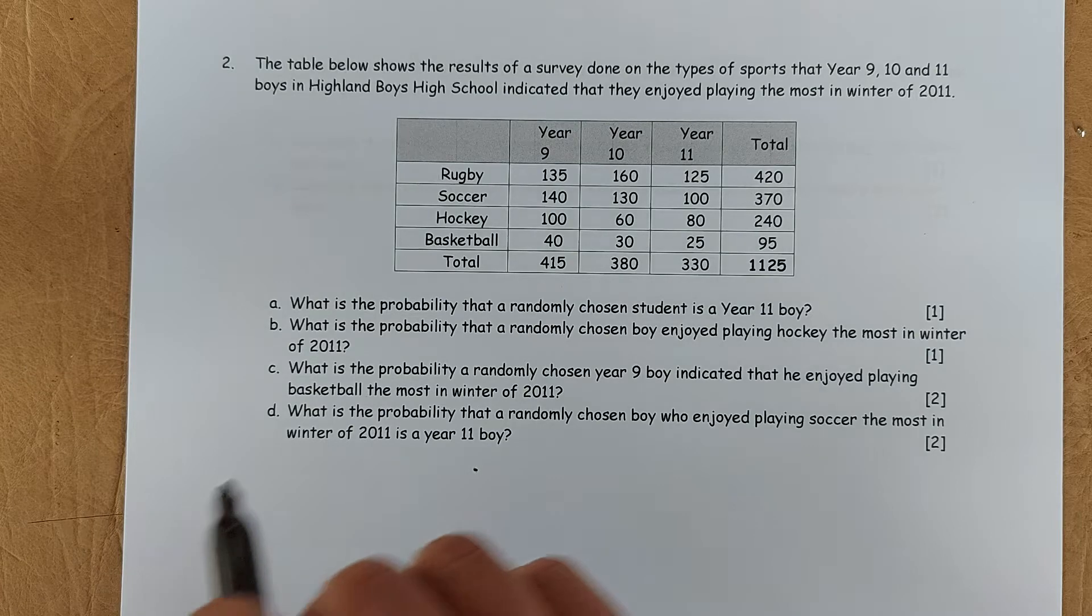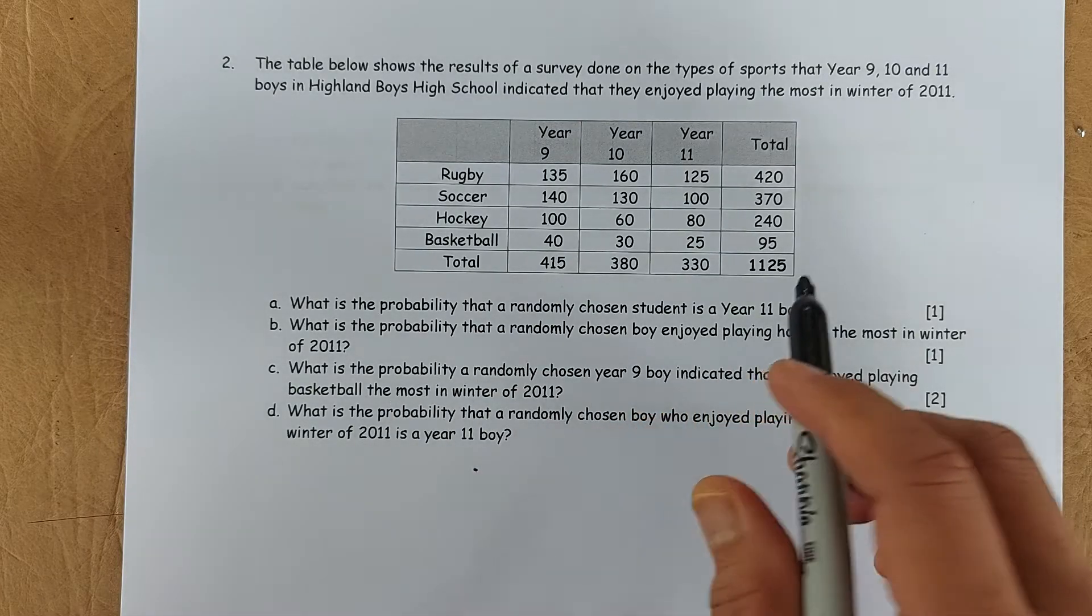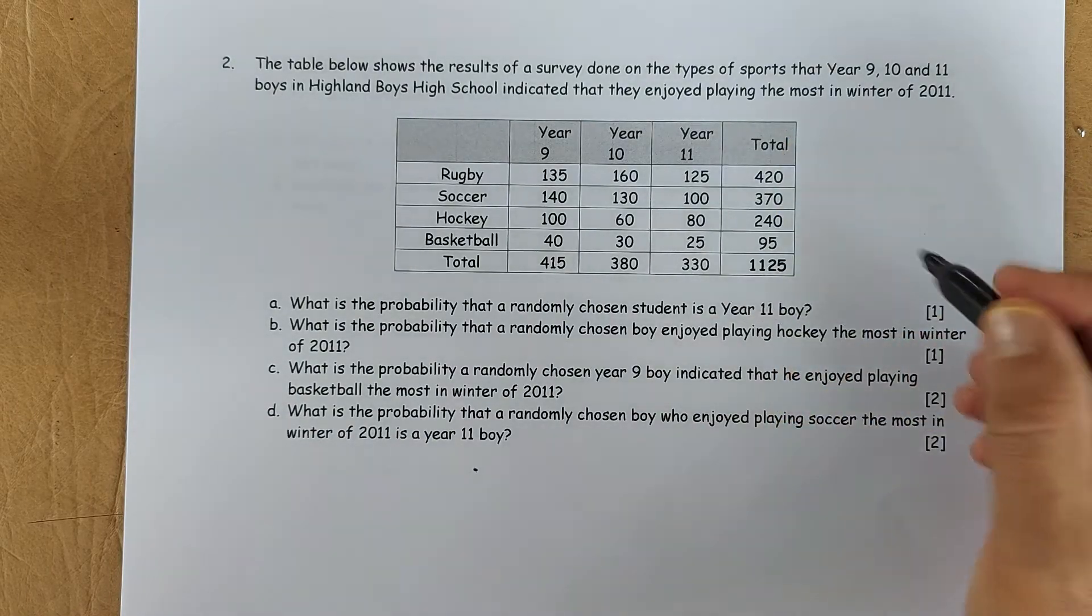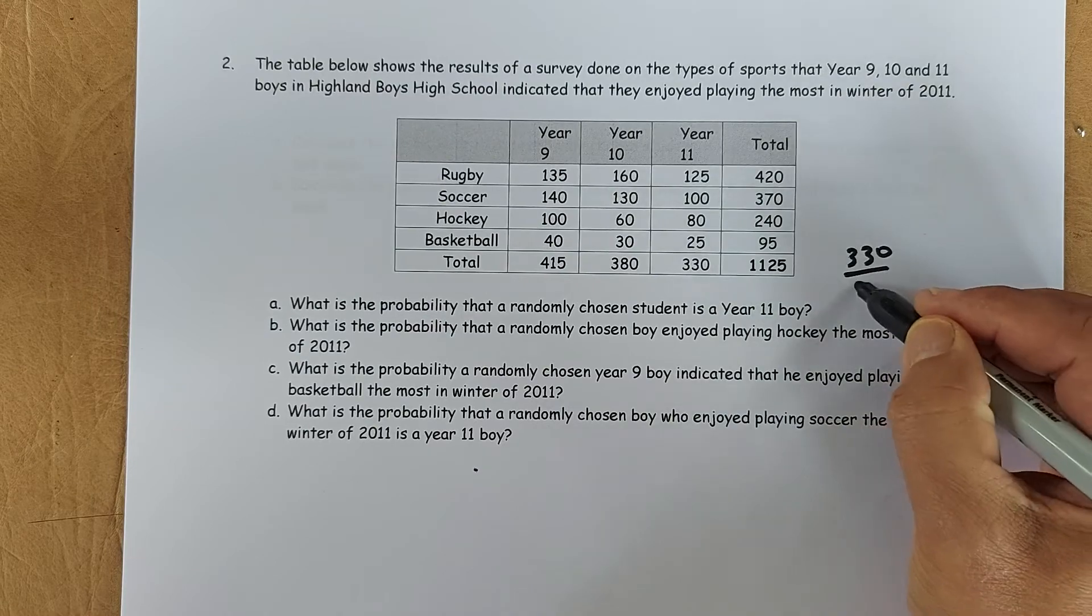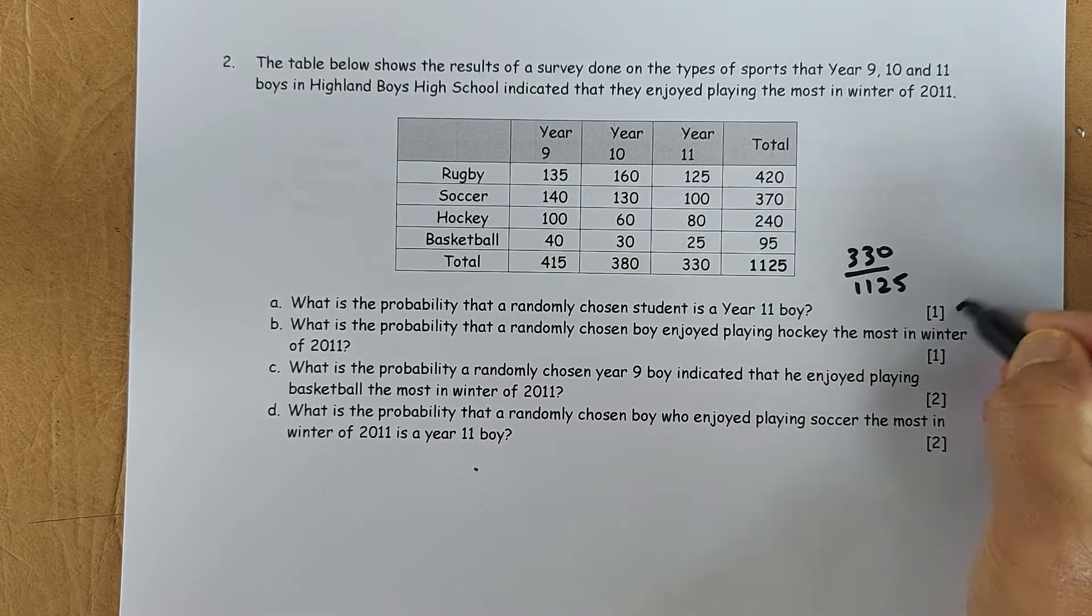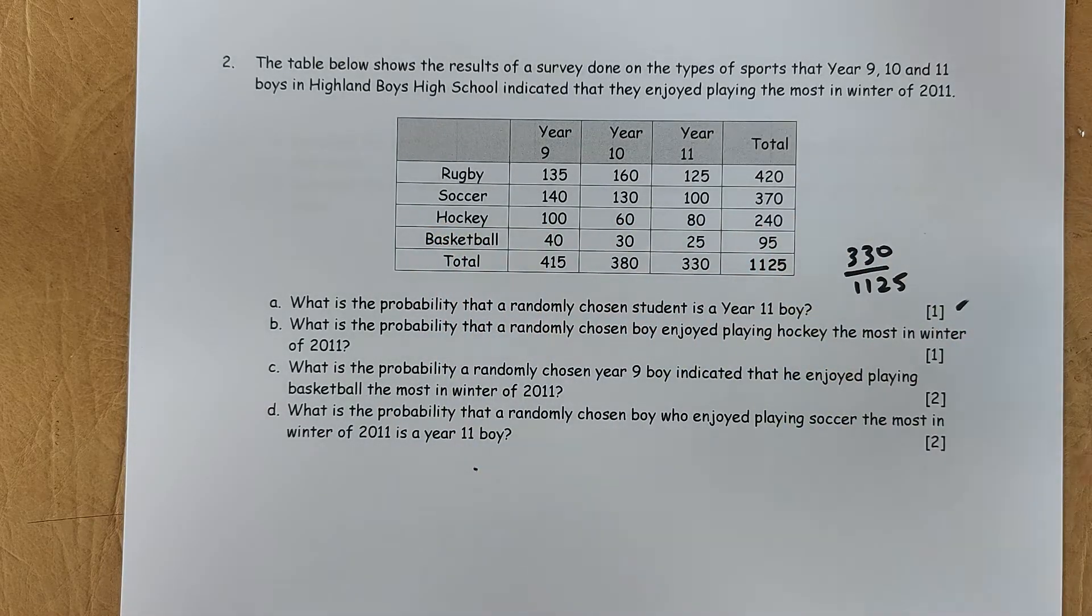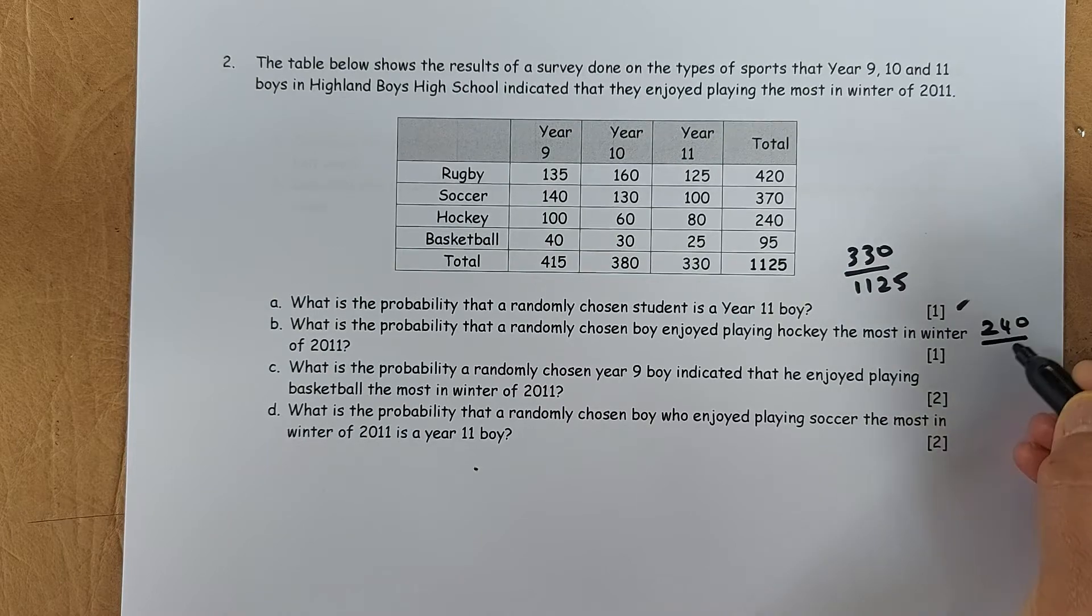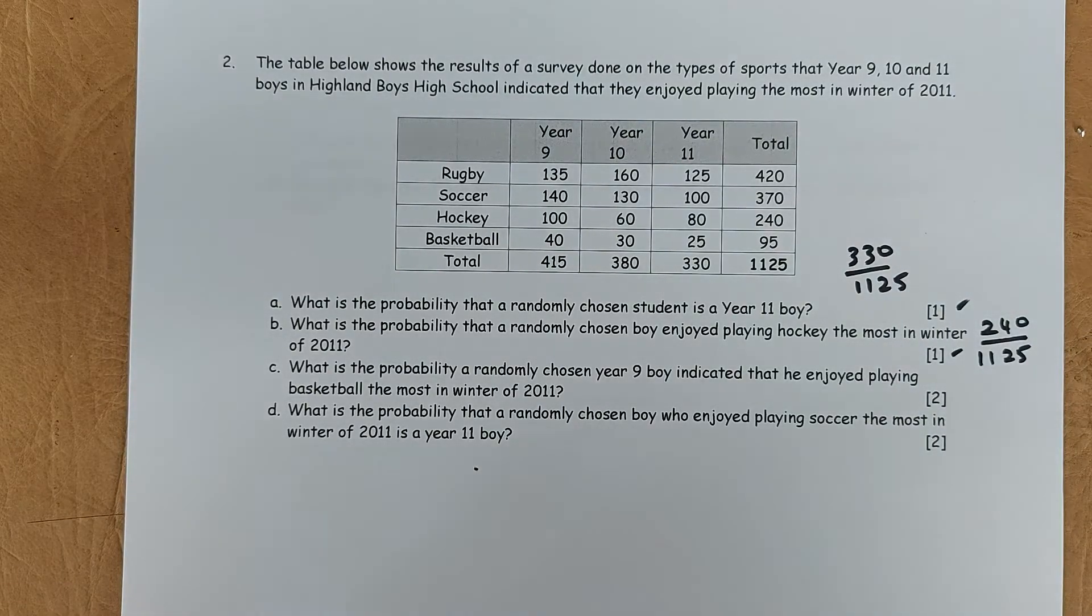So the question is very simple. What is the probability that the randomly chosen student is the year 11? So year 11, the total is 330. So the probability is going to be 330 out of the total 1125. That will give you a 1 mark. Second question. What is the probability that the randomly chosen boy enjoy playing hockey the most in winter? So hockey, you look at hockey, hockey is 240. So it's going to be 240 out of total 1125. That will give you another mark.